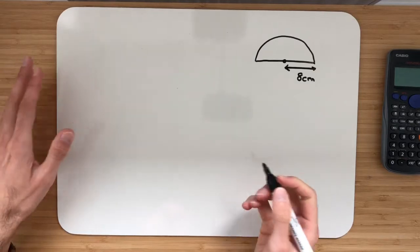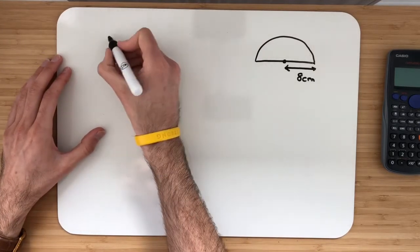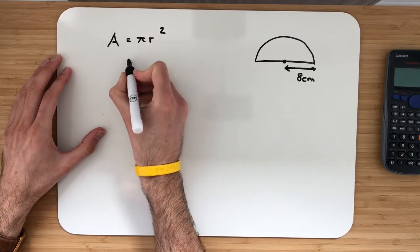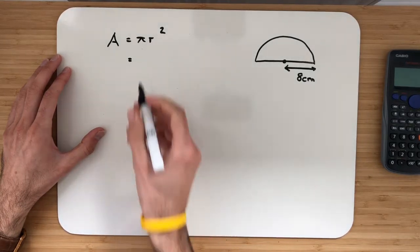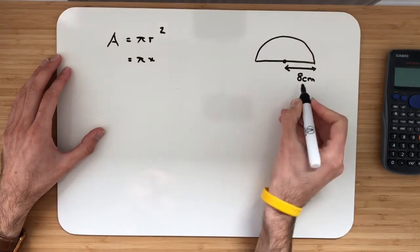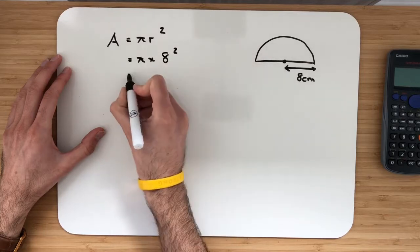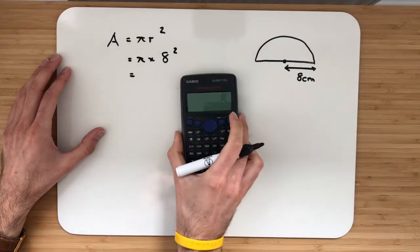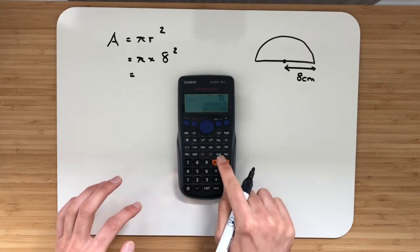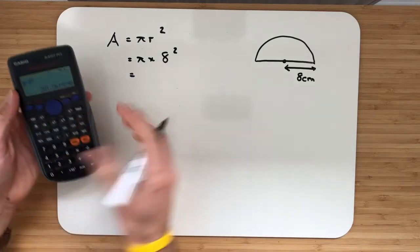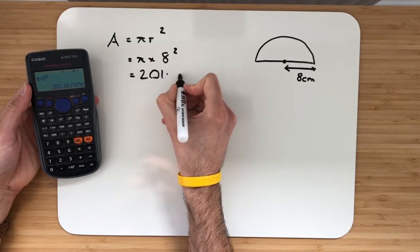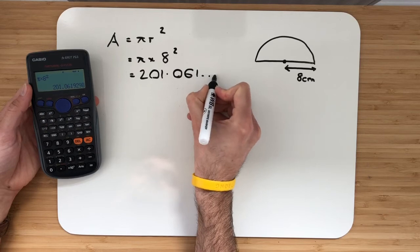As with previous, the first thing we have to do is find the area of the full circle. So capital A is equal to pi r squared. Let's substitute in. Pi multiplied by our radius which is 8 squared. From there let's type that into the calculator. Pi multiplied by 8 squared. Convert it to decimal will give me 201.061 which keeps going.